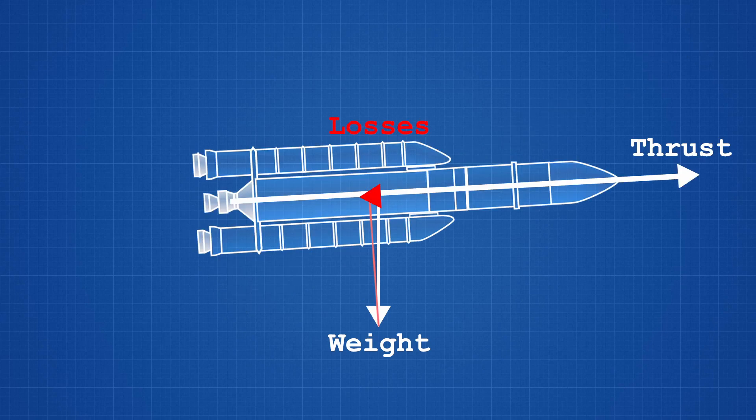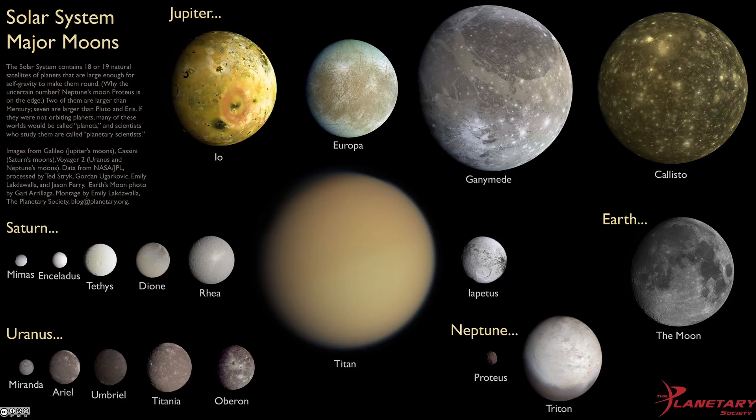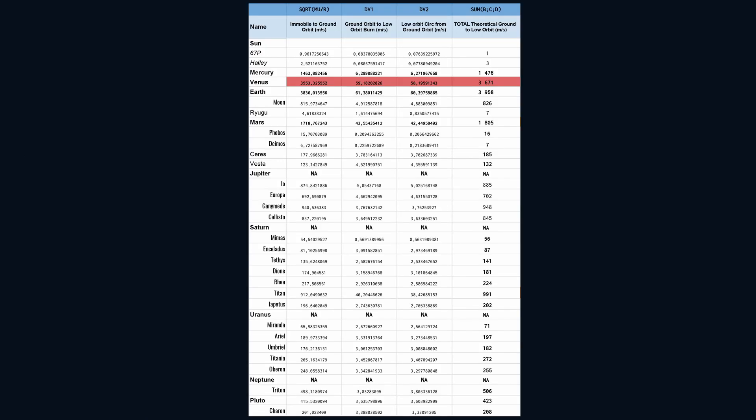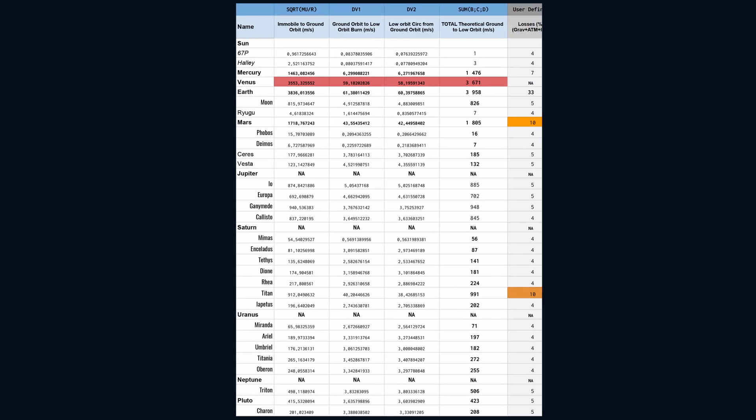What we are going to do is, for every other body than the Earth, estimate what could be a TWR to land on these bodies. In fact, we don't build a lander for Phobos like we would for Mars. For each body, we are going to decide which percentage of losses we will apply.